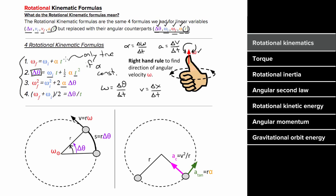There are relationships between these angular variables and their linear counterparts. To get the arc length s the object has traveled through, multiply the radius of the path by the angular displacement. To get the speed of the object, multiply the radius of the path by the angular speed. To get the tangential acceleration, multiply the radius of the path by the angular acceleration.